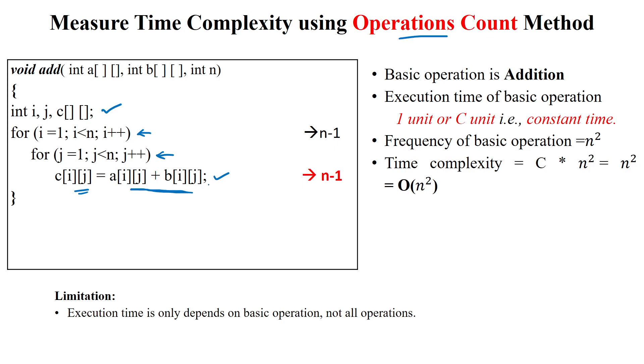Now, we have to calculate how many times this basic operation will execute. Look at this. This row will execute n minus one number of times. n minus one number of times, it will get inside the for loop.